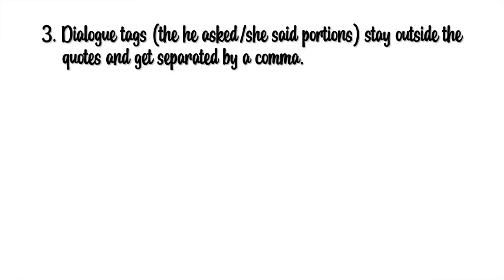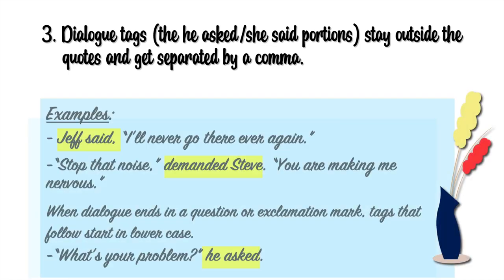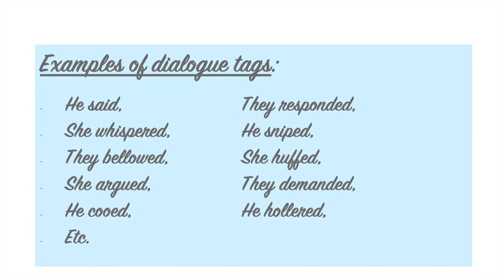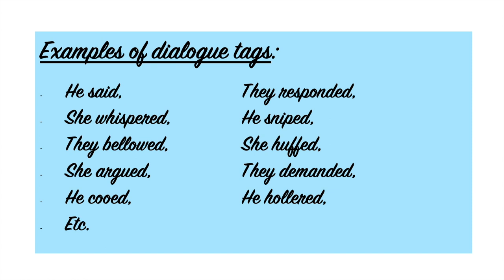Rule number three: Dialogue tags — the 'he said,' 'she asked' portions — stay outside the quotes and get separated by a comma. For example: Jeff said, "I'll never go there ever again." Another example: "Stop that noise," demanded Steve. "You're making me nervous." When dialogue ends in a question or exclamation mark, tags that follow start in lowercase: "What's your problem?" he asked. Notice there is no comma here. Some examples of dialogue tags are: he said, they responded, she whispered, he snipped, they bellowed, she argued, they demanded, he cooed, he hollered, etc. Notice the comma right after the main verb, and the verbs are all in the past simple tense.